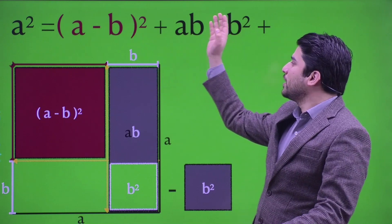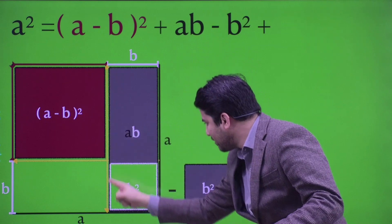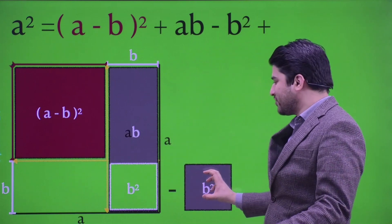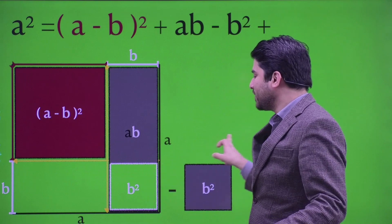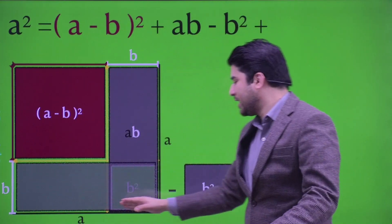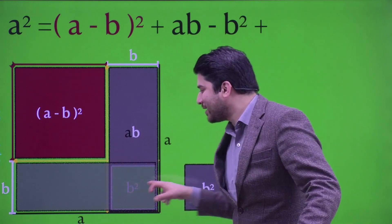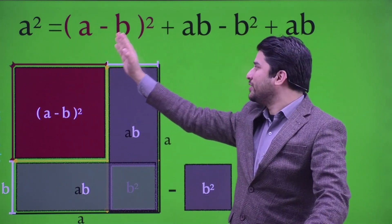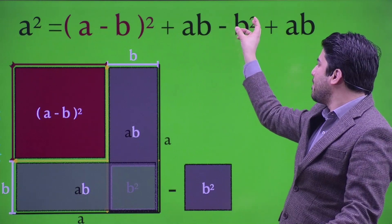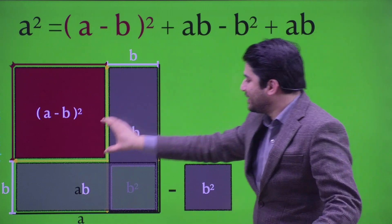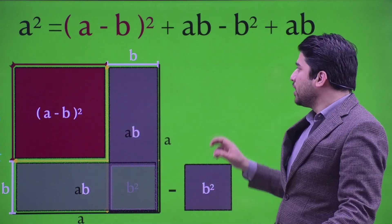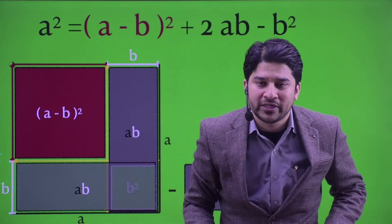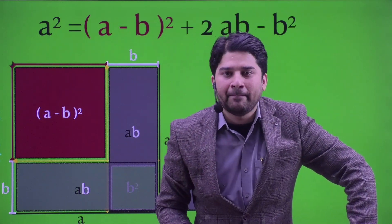So I wrote: a square equals (a minus b) whole square, plus this complete ab region minus b square because I subtracted it. Now the complete green region is a rectangle of dimension a by b, so its area is ab. Therefore: a square equals (a minus b) whole square plus ab minus b square, and ab plus ab makes 2ab. So the equation is: a square equals (a minus b) whole square plus 2ab minus b square.